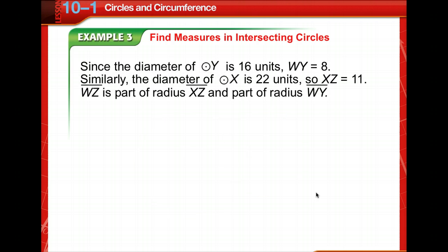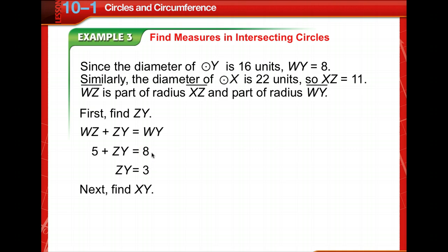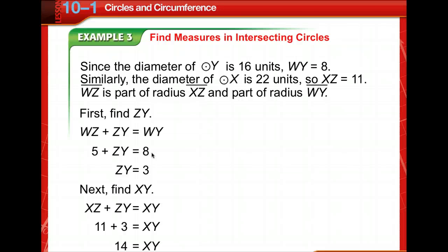We're given the diameter of circle X, so we know XZ equals 11. WZ is part of radius XZ and part of radius WY. First we find ZY: WZ plus ZY equals WY, and since WZ is 5 and WY is 8, ZY must be 3. Next, XZ plus ZY equals XY: 11 plus 3 means XY equals 14.